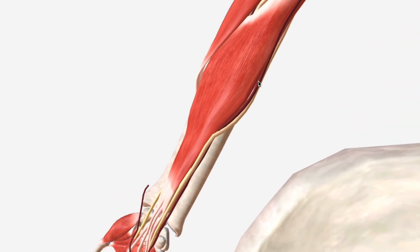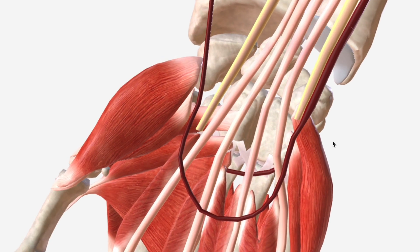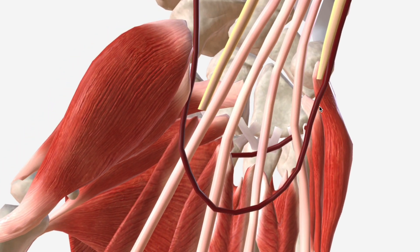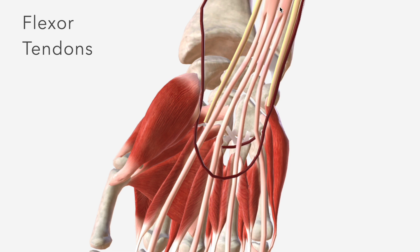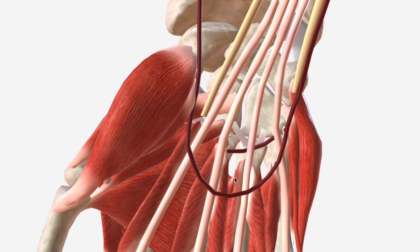A close companion for the majority of this course is the ulnar nerve. In the palm of the hand, we see the deep palmar branch of the ulnar artery forming the deep palmar arch, posterior to the flexor tendons of the flexor digitorum superficialis. The superficial palmar arch runs anterior to these tendons.